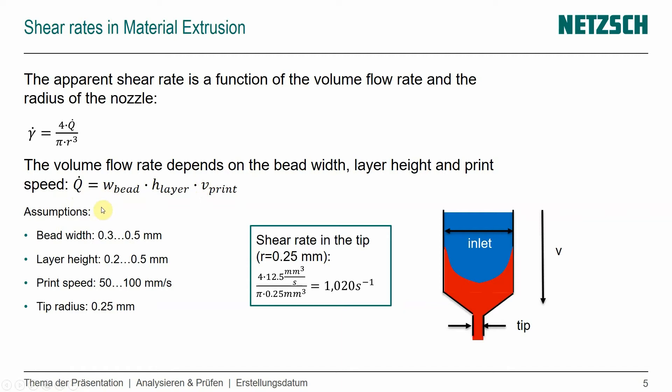Then I wanted to use different assumptions. We can assume a typical bead width is between 0.3 and 0.5 millimeters, typical layer height is between 0.2 and 0.5, and then we can assume a print speed on the lower rate. It could still be lower than 50 millimeters per second, but when we're already printing and not the first layer, print speeds can be between 50 and 100 millimeters per second.